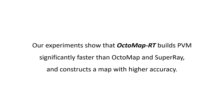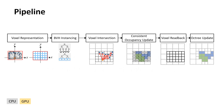OctomapRT builds PVM significantly faster than Octomap and SuperRay and constructs a map with higher accuracy. OctomapRT combines both serial CPU tasks and parallel GPU tasks for fast mapping.